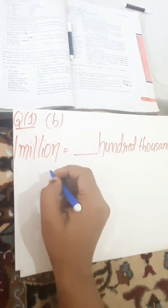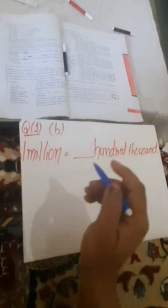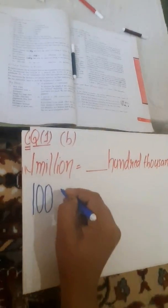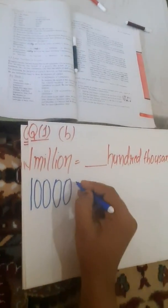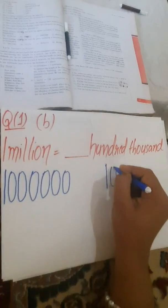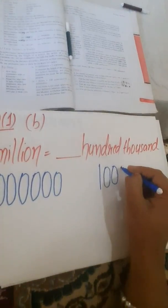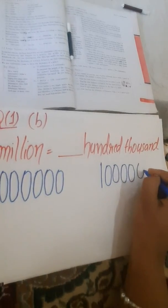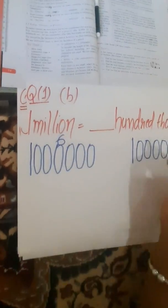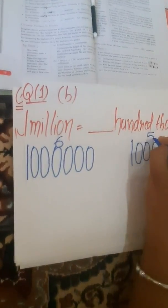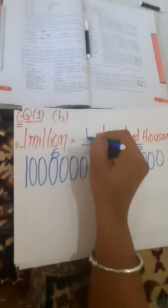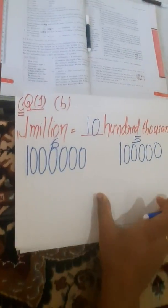Now the B part of question number 1: 1,000,000 is equal to dash 100,000. In one million how many zeros are there? I will count: 1, 2, 3, 4, 5, 6. And in 100,000 — writing 100 and then 1,000 — there are 5 zeros. So how many more zeros are required? We need 1 more zero, that is 10.